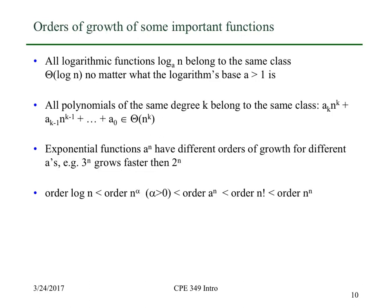A few facts you'll use over and over again in analyzing algorithms: all logarithmic functions belong to the same class no matter what the logarithm base is, because log base 2 and log base 10 differ only by a constant. For polynomials, all we care about is the highest degree term — the degree of the polynomial. Exponential numbers do have different orders of growth though: 3 to the n grows faster than 2 to the n. Just because exponentials and logarithms are inverse functions doesn't mean they behave the same in asymptotic growth — exponential functions grow faster if they have a larger base.